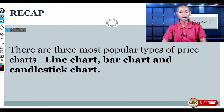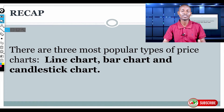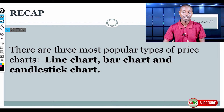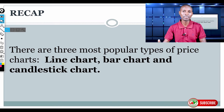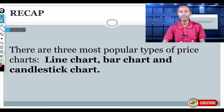In the previous lessons, we have learned about the price chart, where we have seen that there are three main charts which are used among the traders. We have seen that one is the line chart, which shows us the big picture of the market, and the bar chart and the candlestick bar chart, which give more details like the high, the low, the open, and the close of any particular market in a given time.